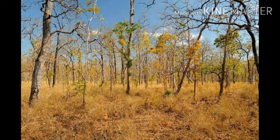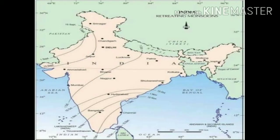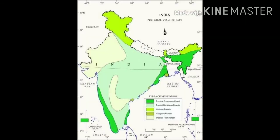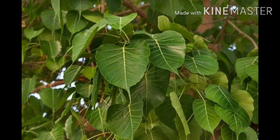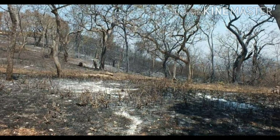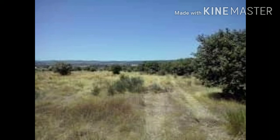Dry deciduous forests are located in areas that receive 100 cm to 70 cm rainfall. These forests are found in the rainier part of the peninsular plateau and in the plains of Bihar and Uttar Pradesh. Open wide stretches of teak, Sal, Peepal, Neem, and other trees are common sights. Most of this forest region has been cleared for cultivation and grazing.